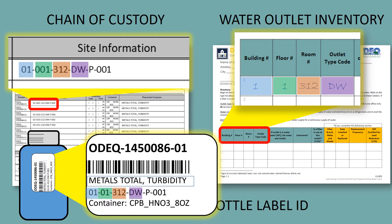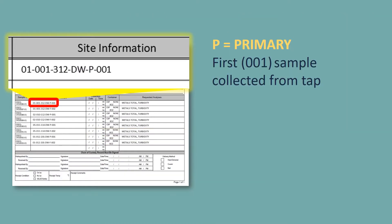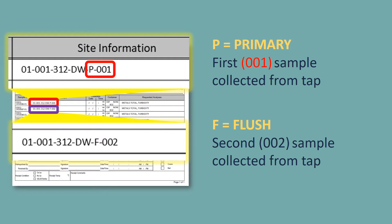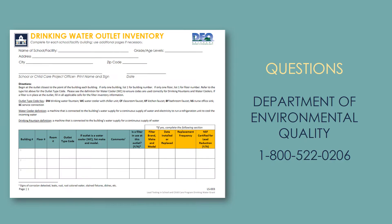This sample location ID will be found on your chain of custody and sample bottle IDs. The remainder of the sample location ID will be based on timing sequence of collection. The first collection at the tap will be the primary sample. The second collection will be the flushed sample. Refer back to your water outlet inventory form for any references.